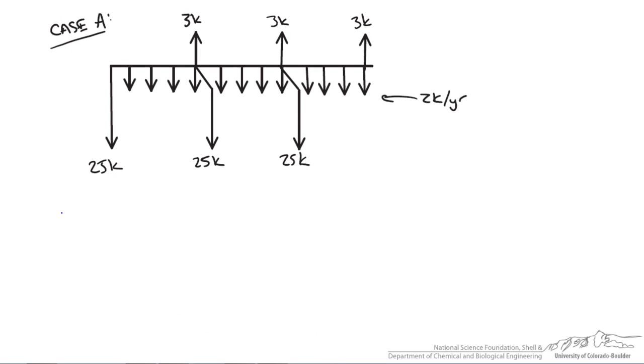For case A, we're going to write the present worth cost, right off the bat is our initial cost, so negative $25,000. Now we're going to sum up our maintenance costs for the 12 years. So the way I'd like to set this up is determine what equation we're going to use for time value of money calculations for this cost.